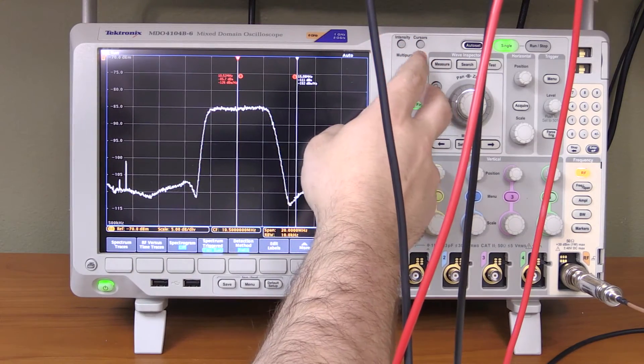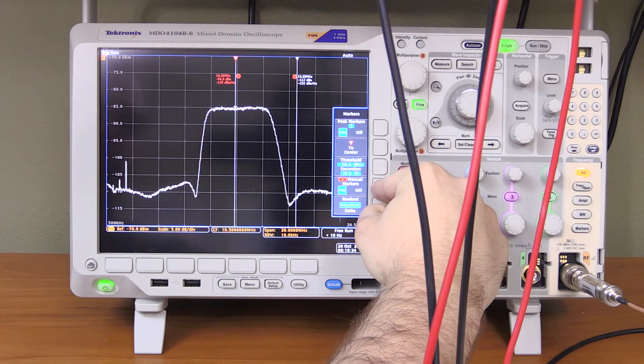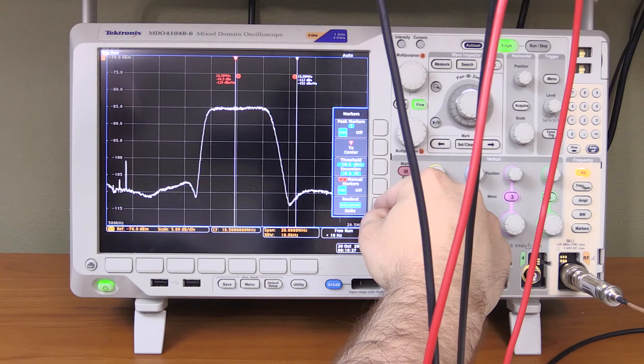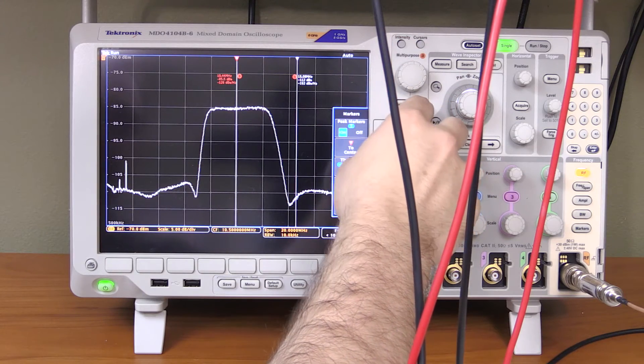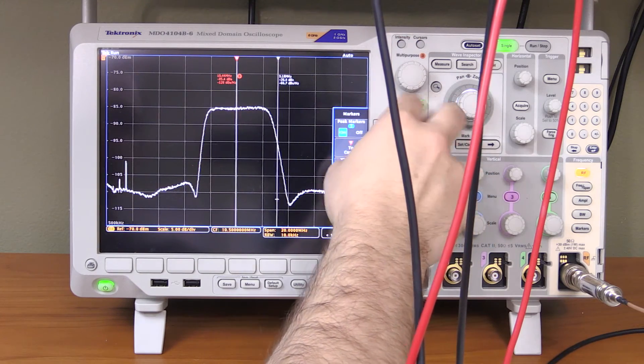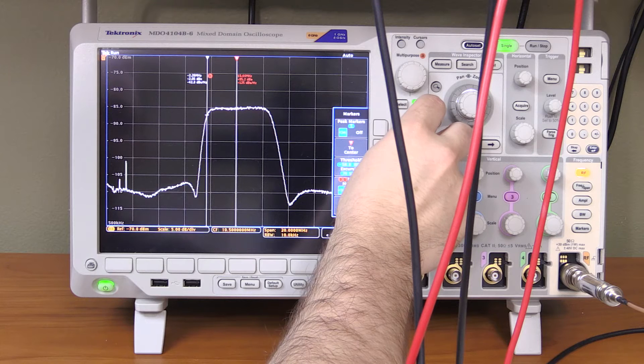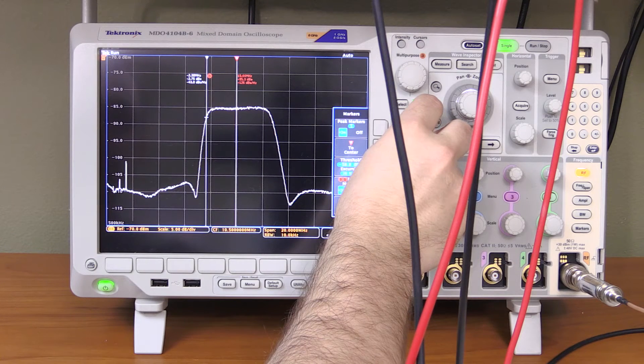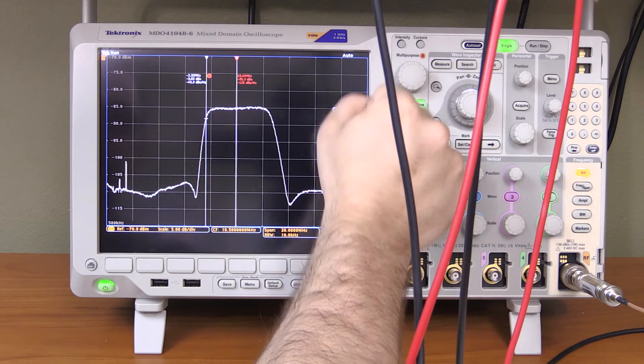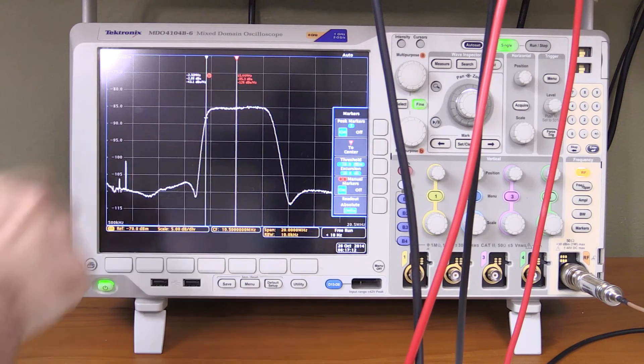So we can start breaking out our markers here. There are several ways if we click on markers. This is the manual markers that you have right here. And you can have absolute and delta readouts. So we want to find our center here somewhere. Let's put it right there. And then let's do delta and figure out where our 3dB points are. So about here we have negative. Come on back. That was a good point. There we go. Negative 3.03. A little bit wiggling around there. Still averaging.